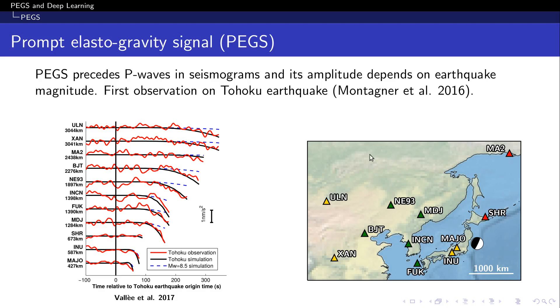The existence of PEGS was predicted by theory, but the very first observation of this signal is quite recent and is due to Montagnier et al. in 2016 for the Tohoku-Oki earthquake. To have an idea of what the signal looked like, the figure on the left shows the observed and modeled waveform at progressively larger distances from the earthquake source of the Tohoku earthquake. Time is relative to the earthquake origin time and traces are cut at the P wave arrival.